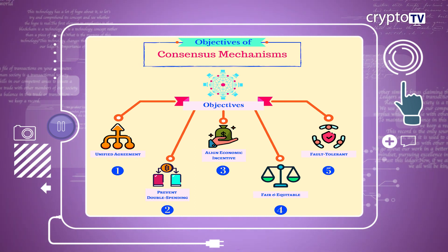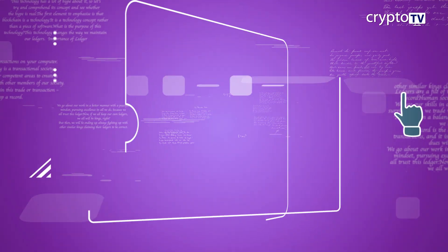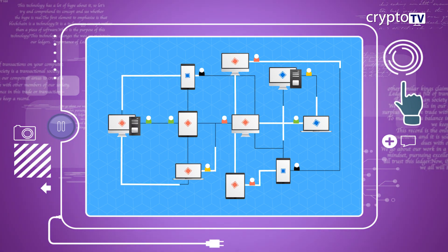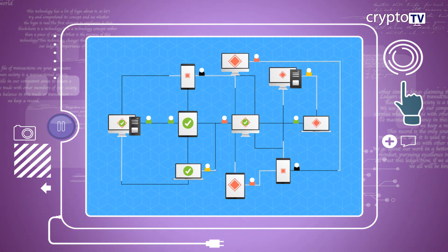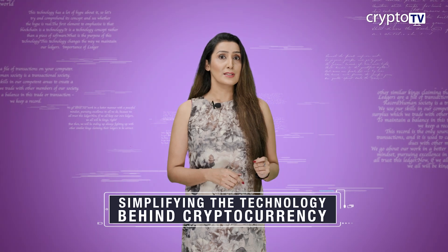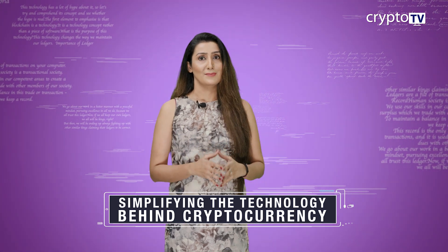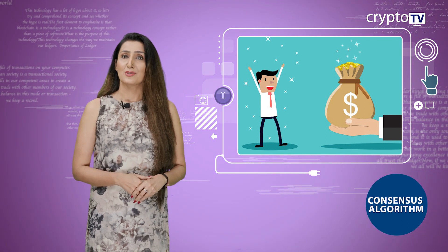The consensus algorithm has five objectives in the DLT environment. First, it wants to achieve unified agreement among participants. In centralized systems, trusting the central authority is mandatory. Here, the participants need to trust the system without having to establish trust among each other — only then can this environment achieve unified agreement. Secondly, the network participants should be motivated to achieve common alignment of all their economic incentives. This is a must to develop a self-regulating system which can be entrusted.